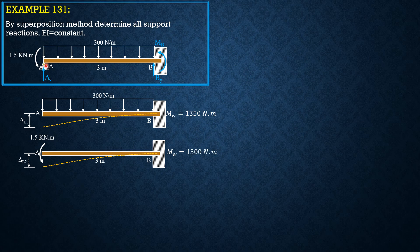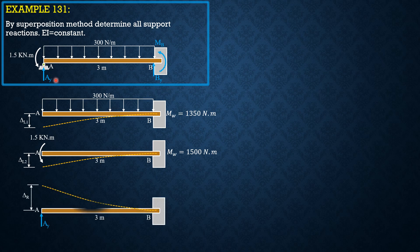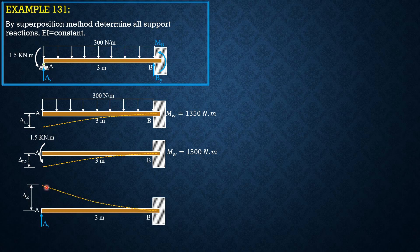Then we apply the vertical upward force AY. And the deflection is delta R, which is upward. And the moment at the wall is 3 times AY.